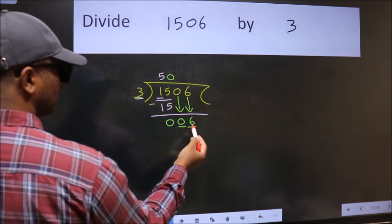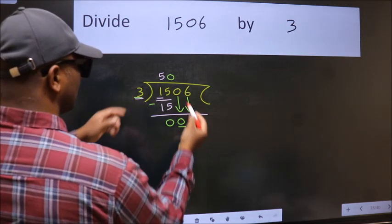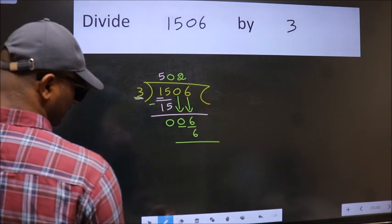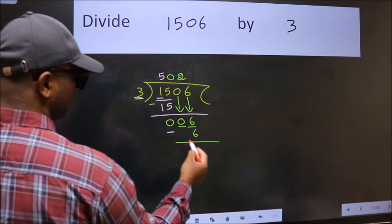So 6. When do we get 6 in 3 table? 3 twos, 6. Now we subtract. We get 0.